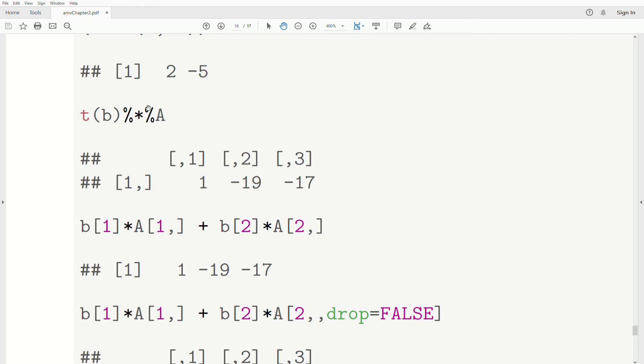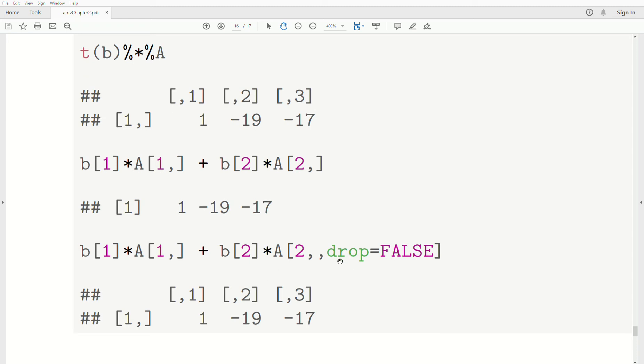Notice that when it's a matrix, notice that there's dimensions, there's rows and columns. But this is not, R says, hey, it's a vector, not a matrix, drop the structure. So it tries to be efficient. So if you put a drop equals false, then it keeps the matrix structure of the product.